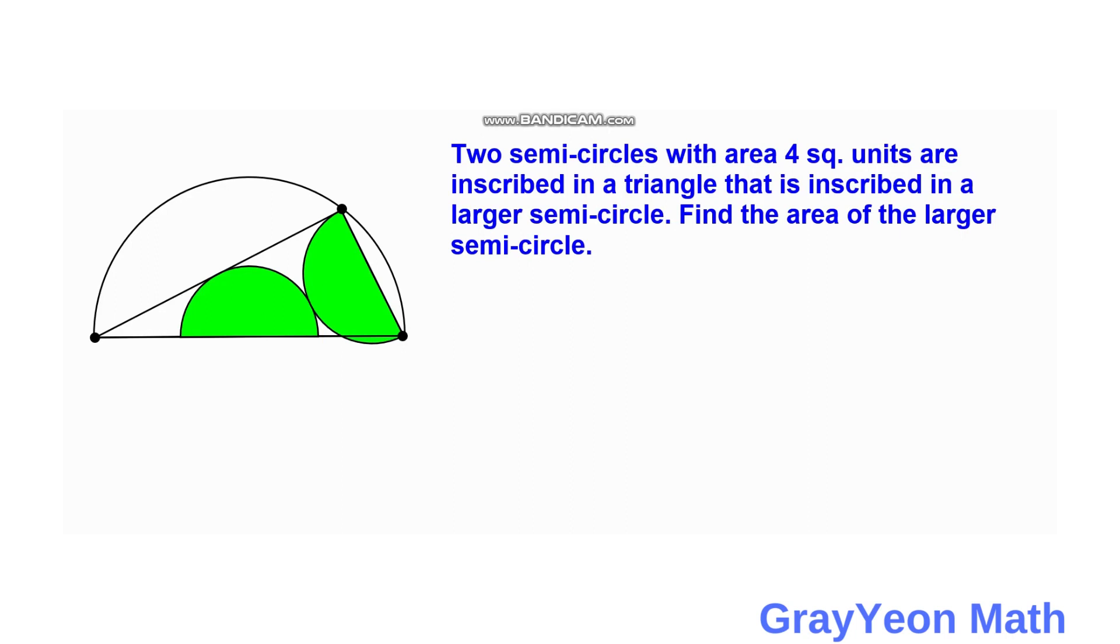First thing that we need to do is draw lines from this topmost point of this triangle and we draw a vertical line. And we notice that by Thales theorem, this is a right angle because this is a right triangle inscribed in a semi-circle.